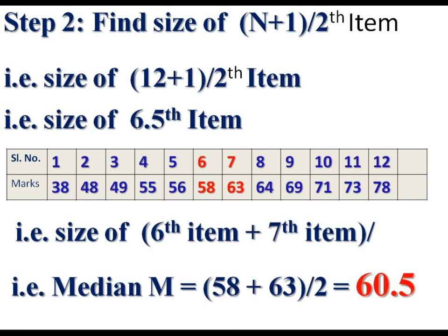6th item is 58, plus 7th item 63, divided by 2. Median is equal to 60.5.